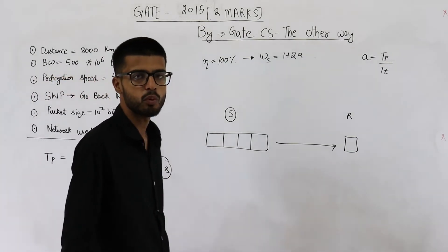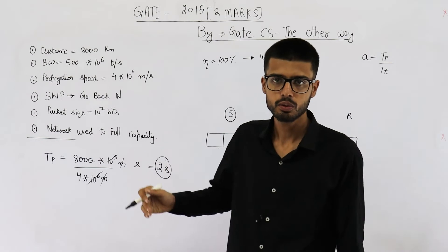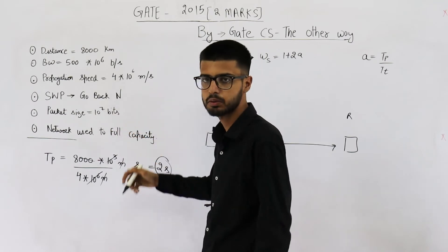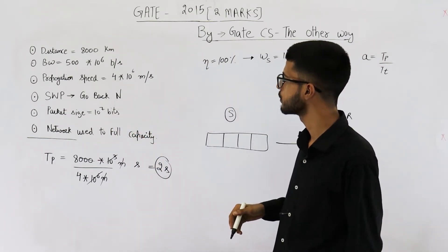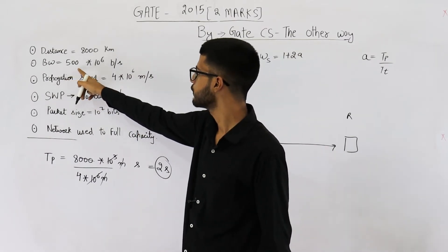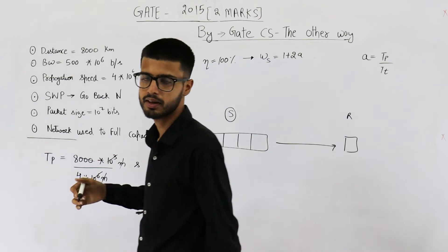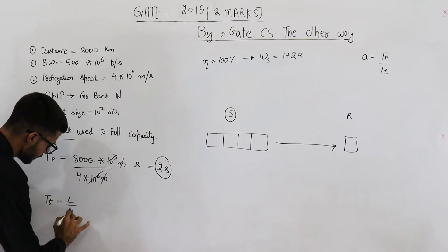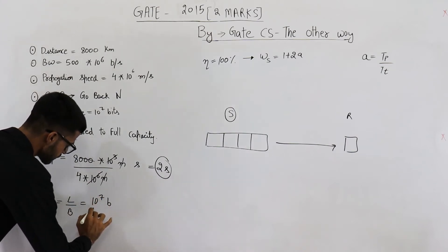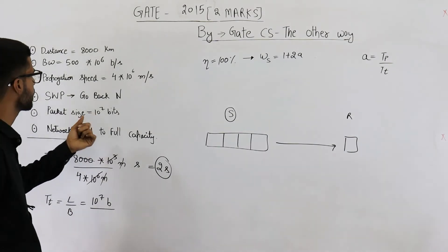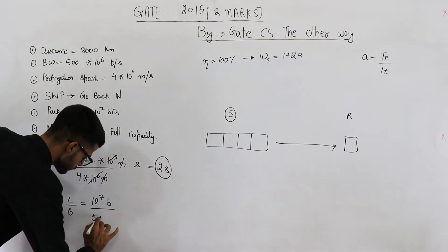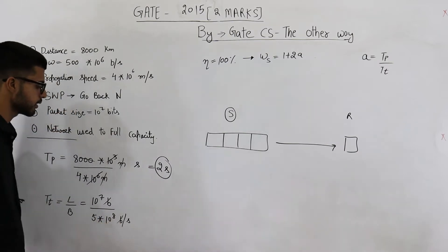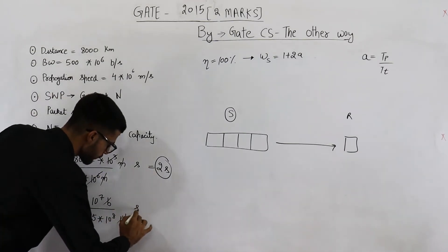So we have calculated the propagation time. Similarly, find out the transmission time. What is transmission time? L by B, length of the packet divided by the bandwidth. Length of packet is 10^7 bits, it is given in the question. Bandwidth is also given in the question, it is 5 × 10^8 bits per second. Transmission time is L upon B which is 10^7 bits divided by 5 × 10^8 bits per second. Bits and bits can be cancelled. Per second will become second.